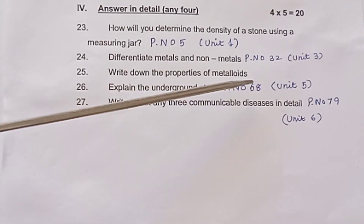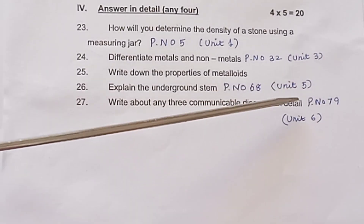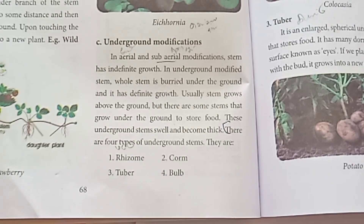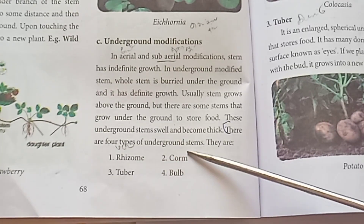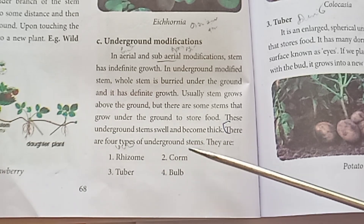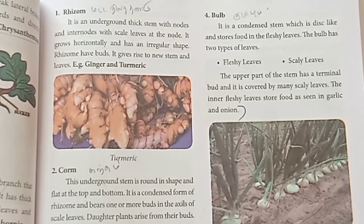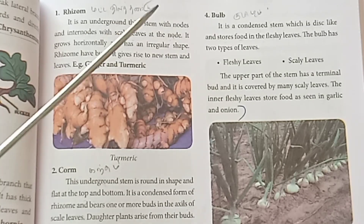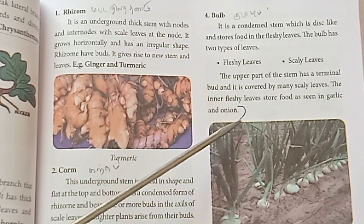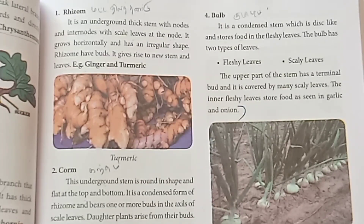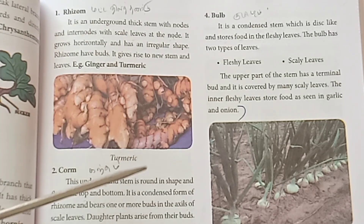Question 26: Explain the underground stem. Page number 68, Unit 5. Answer: There are 4 types of underground stems. Refer to page 69 for details. Onion is an example of a bulb, which is a type of underground stem. Include diagrams of the different types of underground stems.